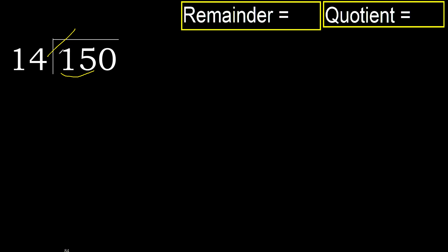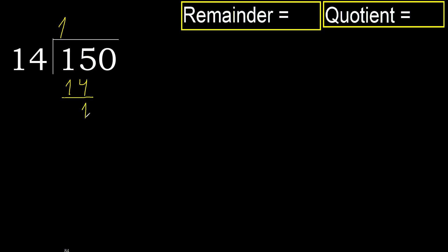14 multiplied by 2 is 28, which is greater. Multiplied by 1 is 14, which is not greater. Ok. 15 minus 14 is 1. Next.